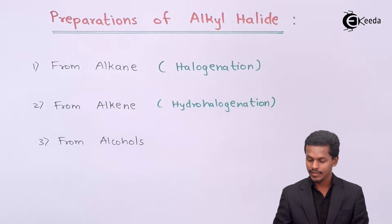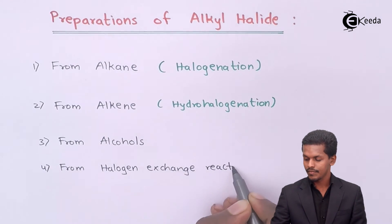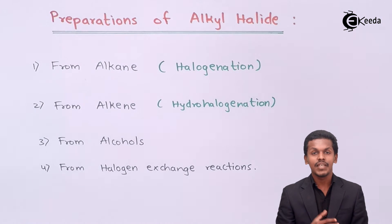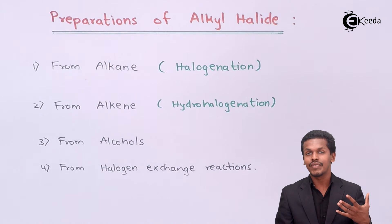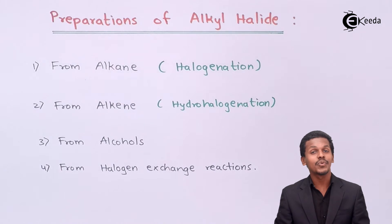The last method is the halogen exchange reaction. For example, if we have an alkyl fluoride and we want to replace the fluorine atom attached to the alkyl group with another halogen, various halogen exchange reactions can take place. This is what the halogen exchange reaction is, and this is how we can prepare alkyl halides using different methods.